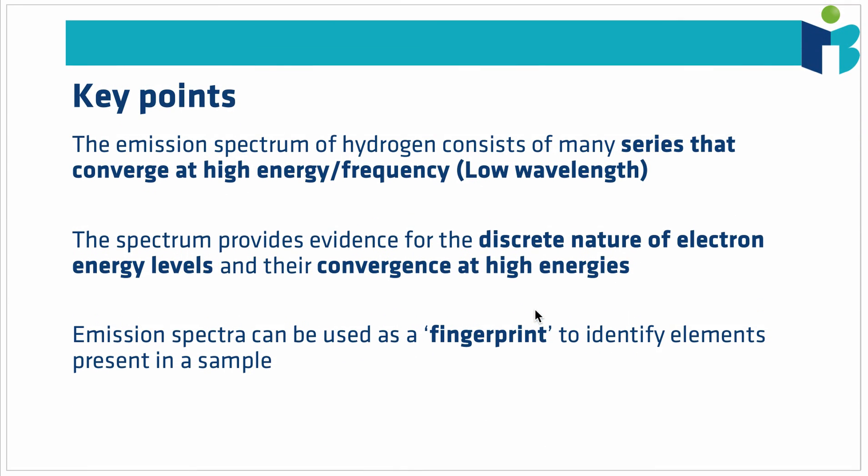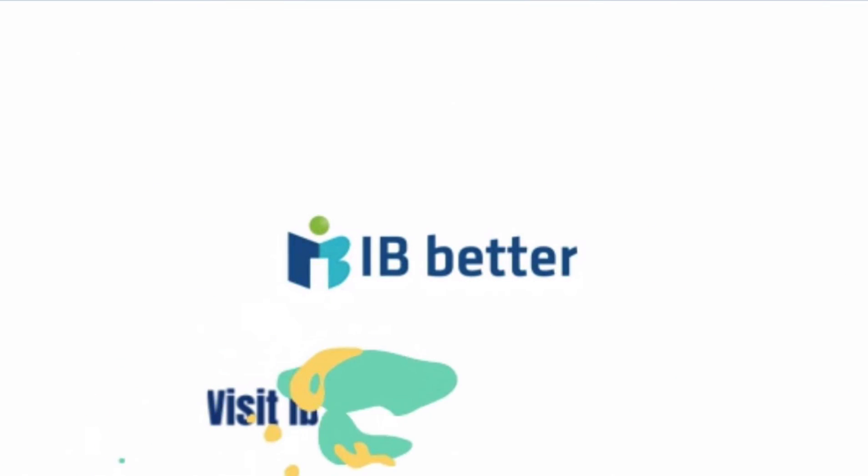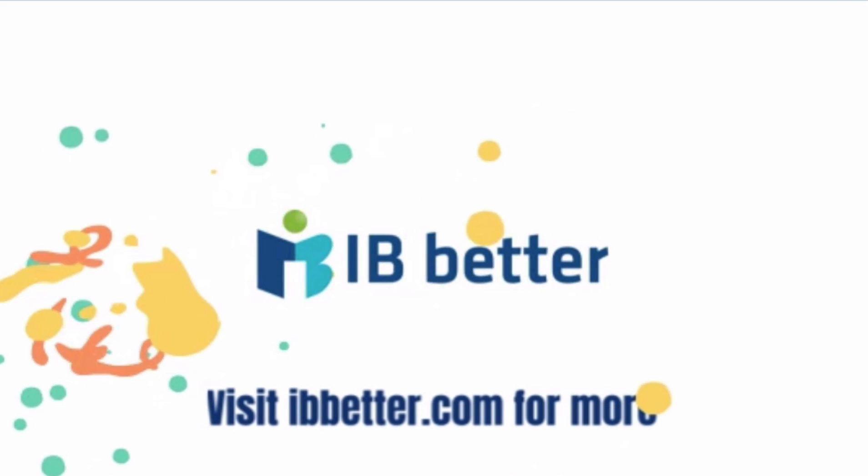To sum up: from the energy levels, the hydrogen spectrum consists of a number of convergent series, all converging at high energies, high frequencies, and therefore low wavelengths. The discrete nature of the emission spectrum tells us that atoms must have discrete energy levels, and the convergence of the spectral lines means those energy levels themselves must converge at high energies. Finally, since each element's emission spectrum is unique due to its unique energy level structure, emission spectra can be used as a fingerprint to identify elements in an unknown sample.